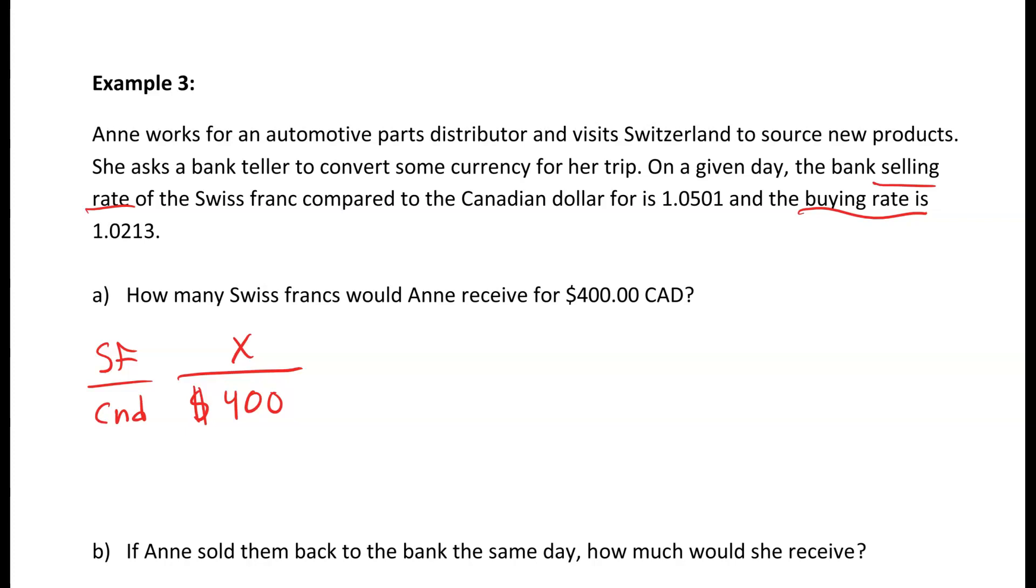The next thing that we have to look at is are we using the buying rate or the selling rate? Well we're trying to convert money and get that money from the bank, so it's what the bank is going to sell it at. So we need to use the 1.0501. That sets up our cross multiplication so that 1 Swiss franc is compared to Canadian dollars of 1.0501. So 1 Swiss franc is over the 1.0501.